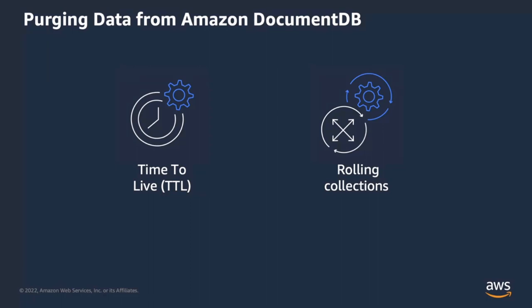An alternate option is to use rolling collections. In this approach, you segment documents into collections based on the retention period and drop these collections after the retention period expires. Since dropping a collection in DocumentDB does not result in an explicit delete operation, you don't incur any I/O cost. Also, dropping a collection is efficient from a performance standpoint because the buffer cache is not updated, so regular read and write operations are not impacted.